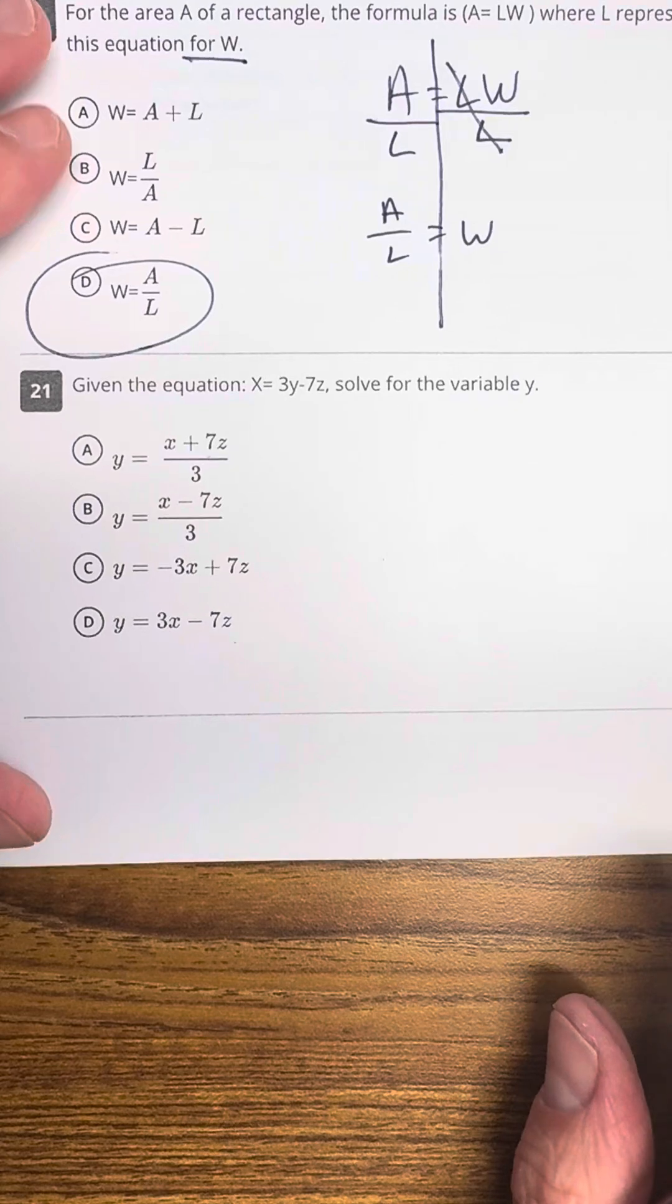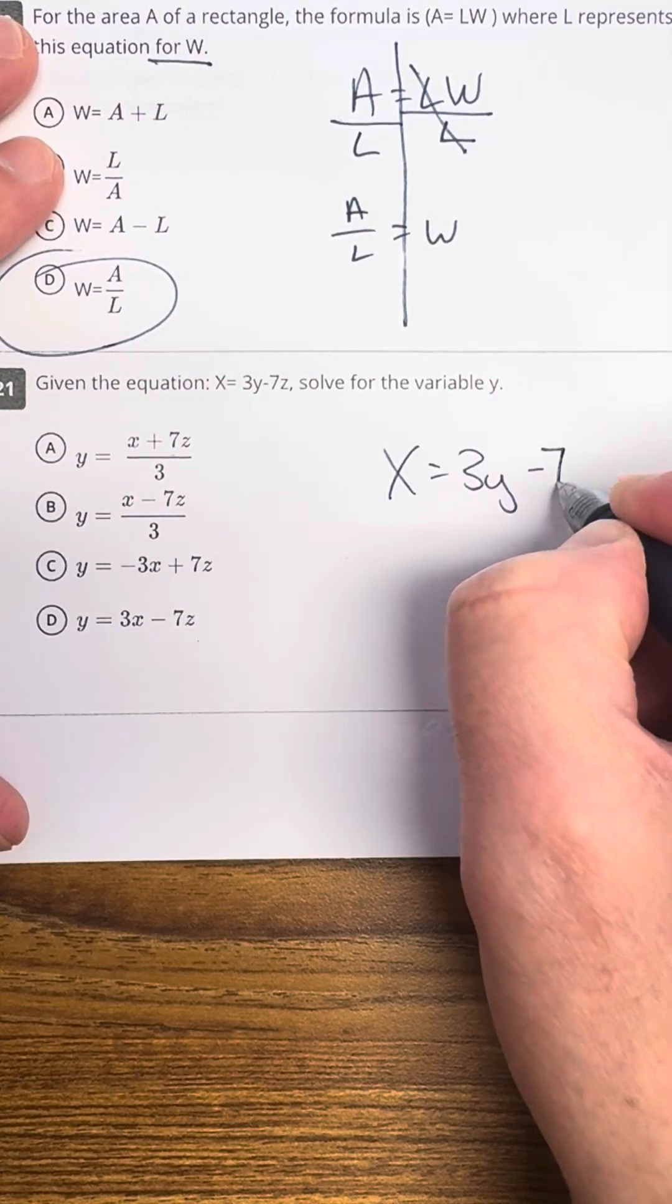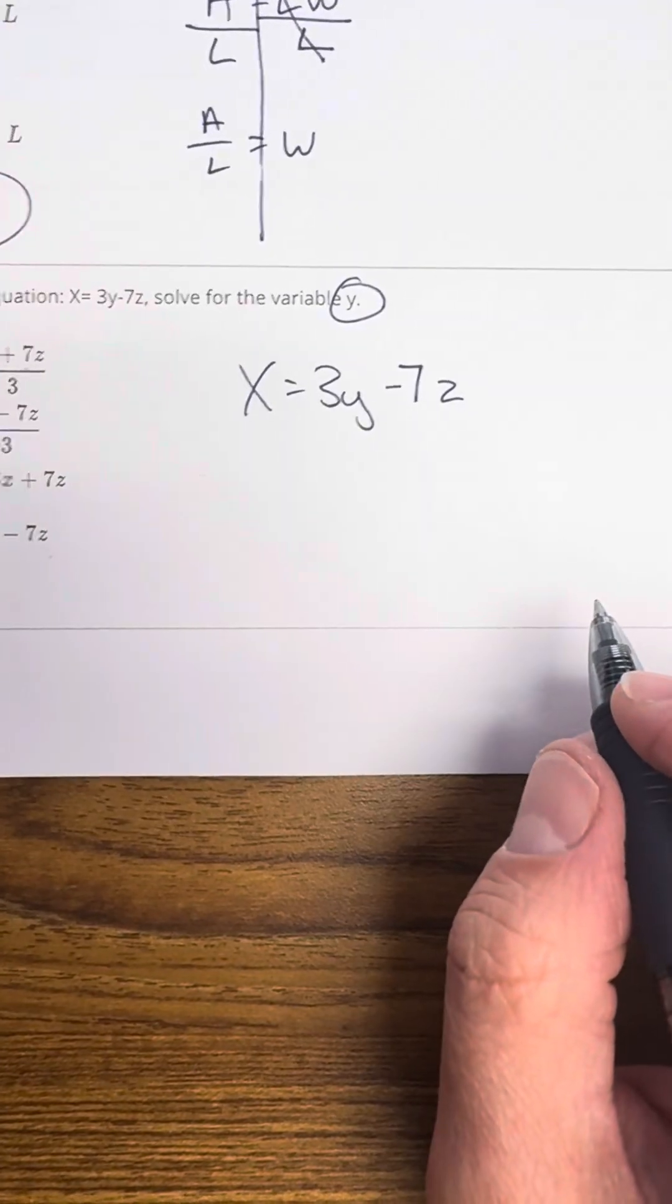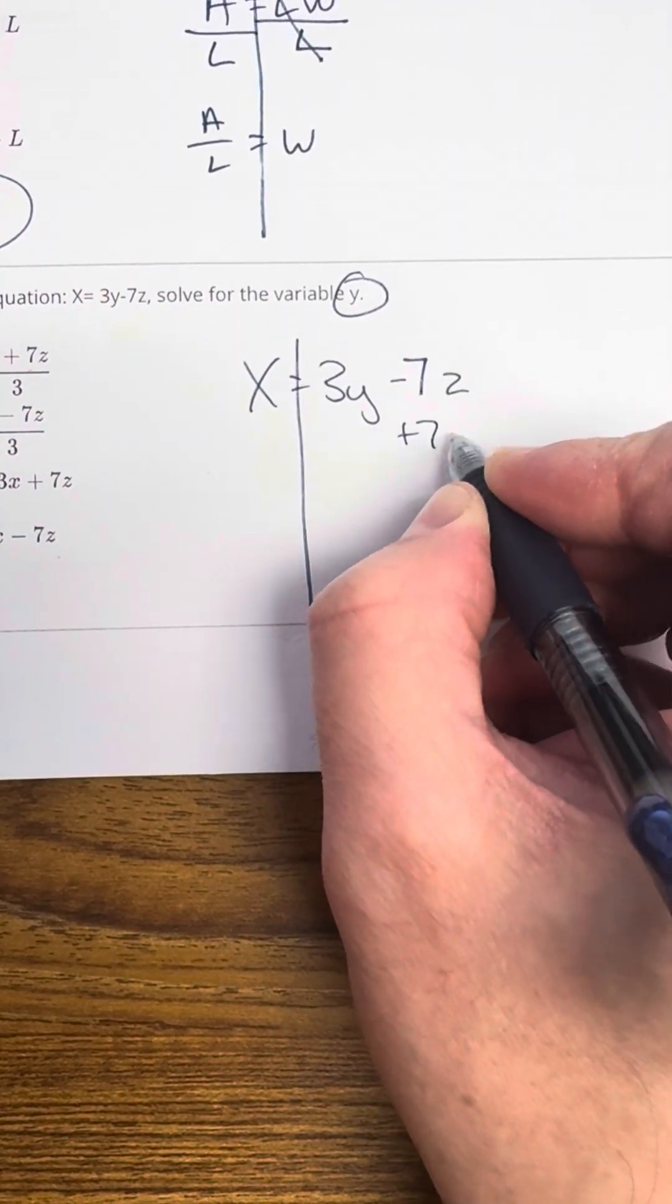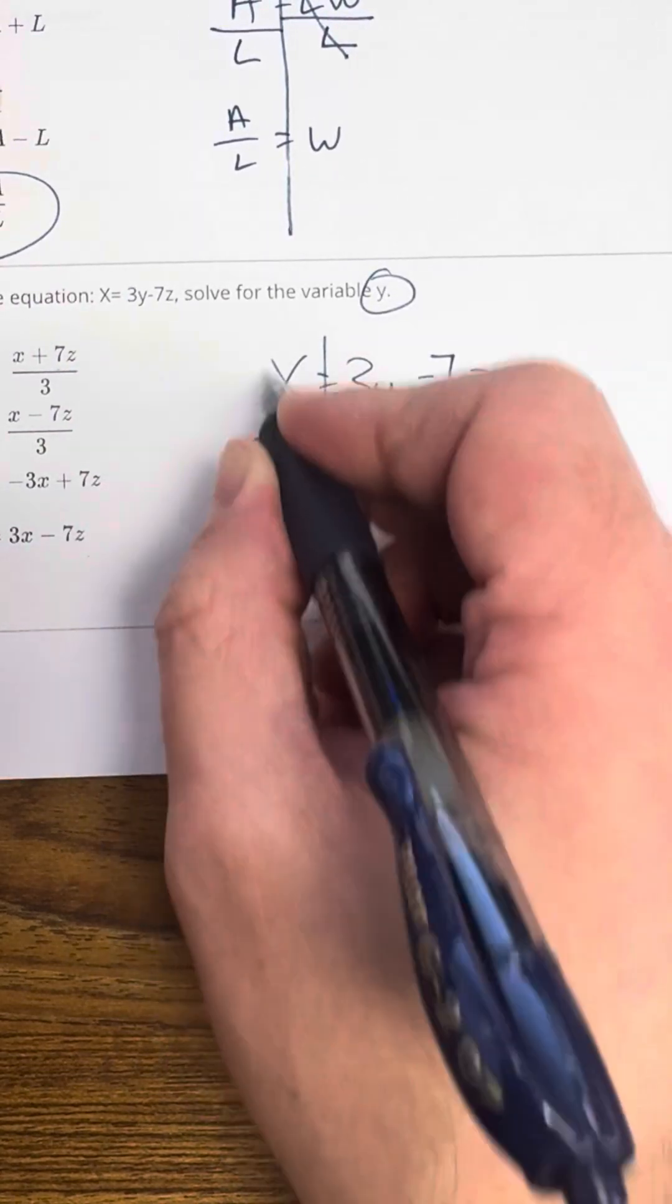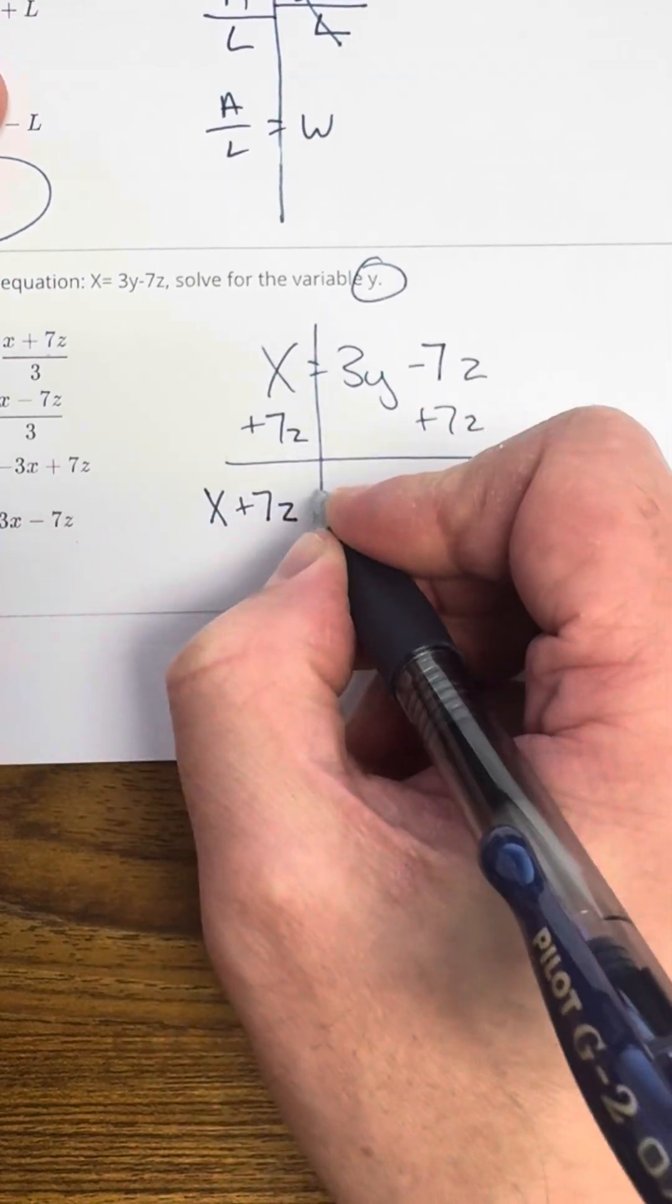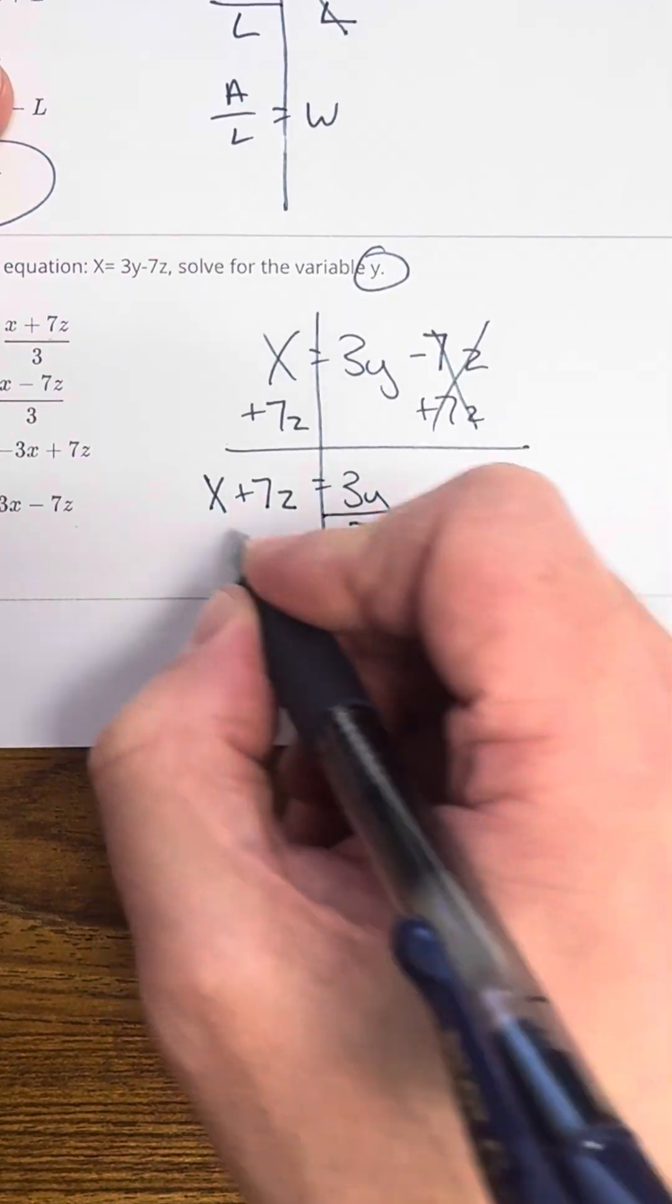Next one, 21. Okay, we've got this equation X equals 3Y minus 7Z. I want to solve for Y. Now Y needs to be by itself. But right now, I want to get rid of this negative 7Z. So I'm going to add 7Z on both sides. I can't add 7Z to X because they're not like terms. So I can do X plus 7Z equals 3Y because I got rid of the Zs.